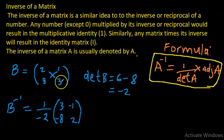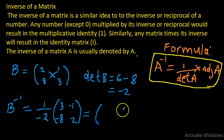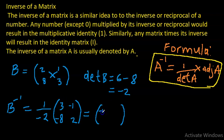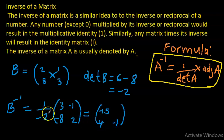Before doing another example, let's test whether B times B inverse gives us the identity matrix. Let me rewrite B inverse by multiplying each term by negative one half — which is the same as dividing by minus 2. So negative one half times 3 is negative 1.5, negative 8 divided by negative 2 is 4, negative one half times minus 1 is positive 0.5, and then we get minus 1.